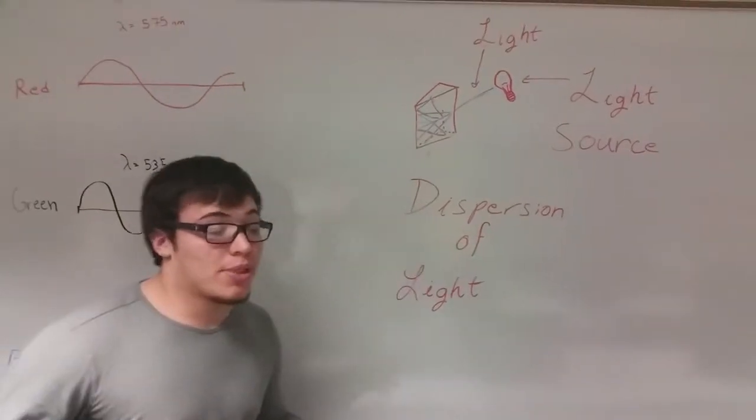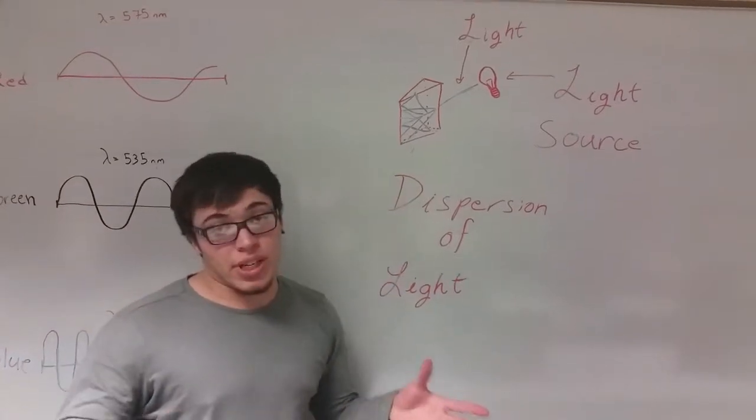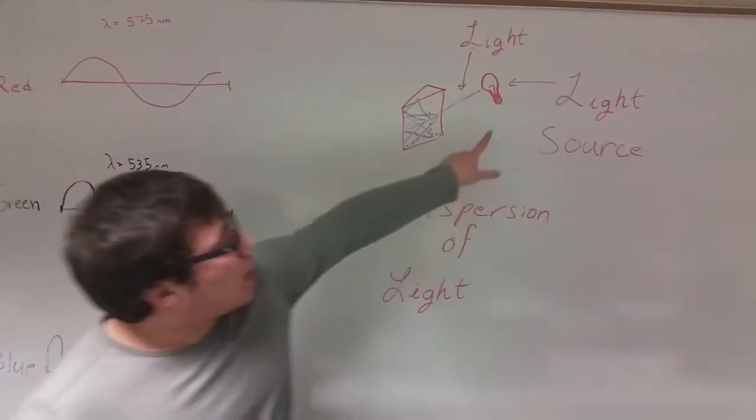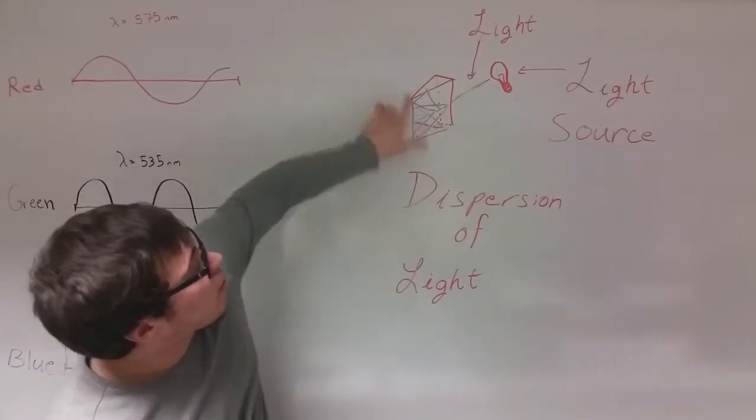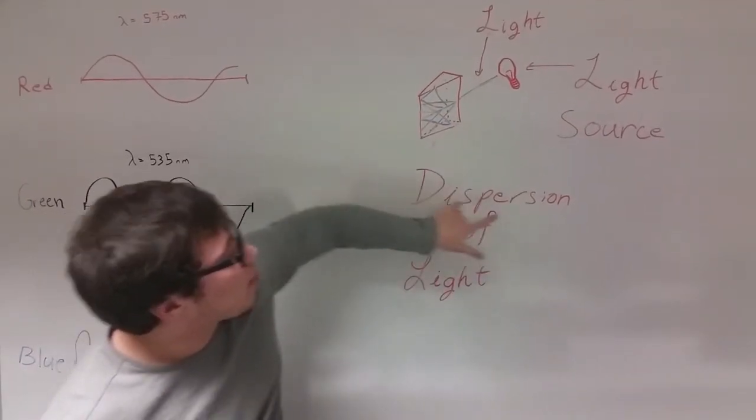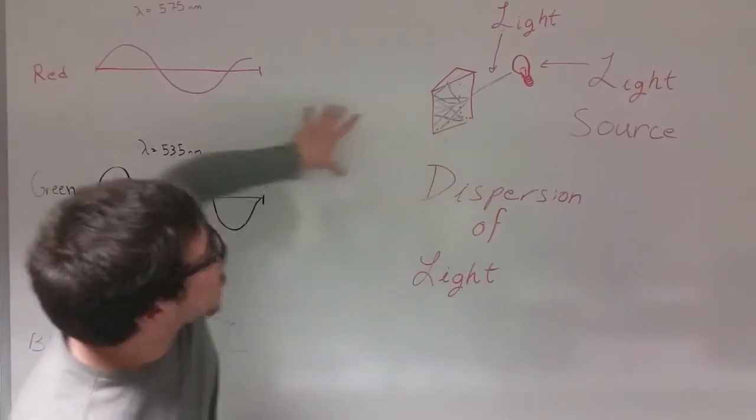Yes. So now let's talk about prisms. Prisms are something like these. And in our experiment, we use CDs. What you need is a light source, and the light will go into the prism and then disperse around. This is known as dispersion of lights. And once it goes around inside the prism, it will come out like a rainbow.